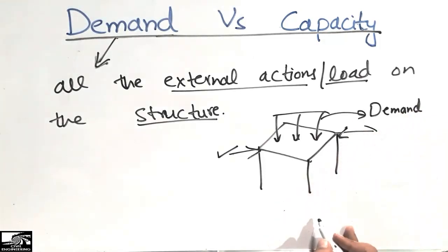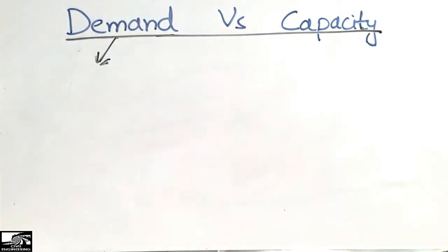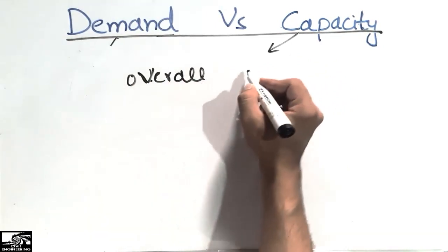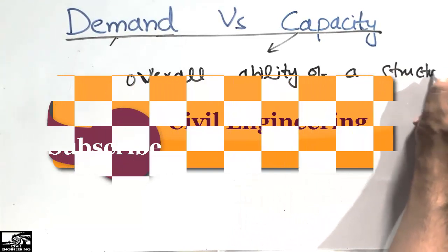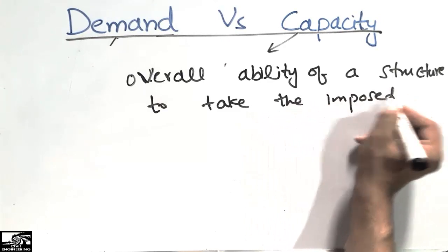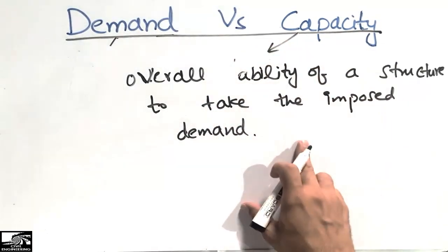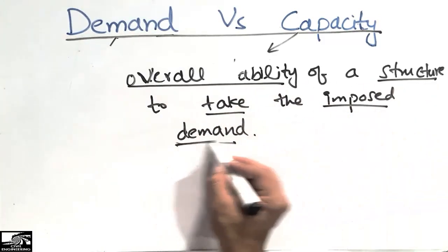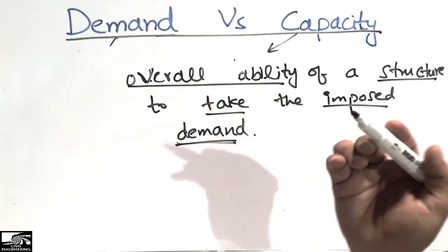Now what is capacity? The capacity is the overall ability of a structure to take the imposed demand. It is the resistance offered to the demand. We call this resistance of the structure the capacity of the structure.